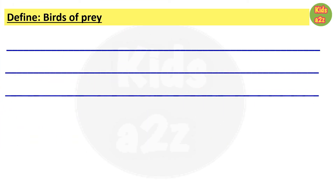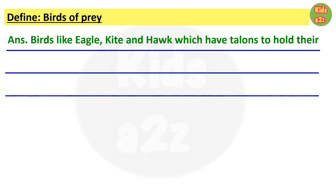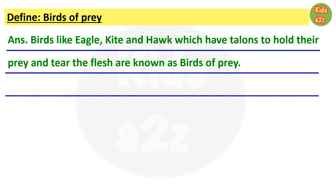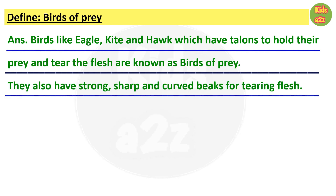Next question: define birds of prey. Answer: birds like eagle, kite and hawk which have talons to hold their prey and tear the flesh are known as birds of prey. They also have strong, sharp and curved beaks for tearing the flesh. Thanks for watching — Kids A to Z.